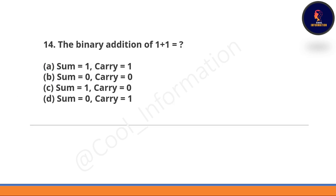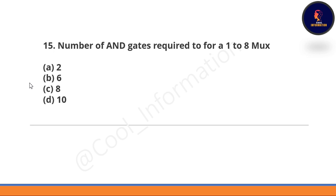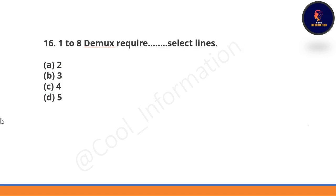Next question: The binary addition of 1 plus 1 — this is a very simple and basic question, and I have seen it is the most frequently asked question, appearing in almost every exam. The correct option is option D — the binary addition of 1 and 1 gives sum = 0 and carry = 1. Next question: Number of AND gates required for a 1-to-8 multiplexer — option A: 2, option B: 6, option C: 8, option D: 10. The correct option is option C — 8 AND gates are required for a 1-to-8 multiplexer.